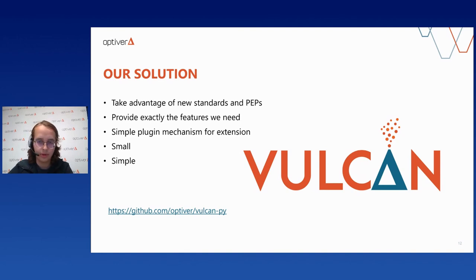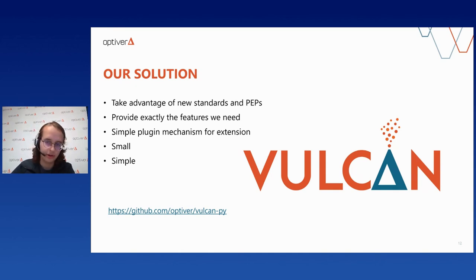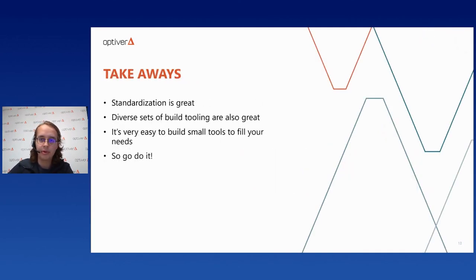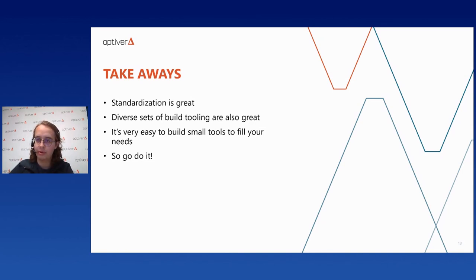Vulcan also supports a very basic plugin mechanism for build-time plugins — you could use it to generate build info or even compile C++ extensions. It comes with a conversion script to make getting started easy. If you take anything away from this talk, I want to emphasize that making this kind of tool is something you can do. If Vulcan isn't for you, you can make one yourself — that's the freedom that having these standard building blocks offers. I can imagine a build tool that specializes in projects with compiled C++ extensions, for example.